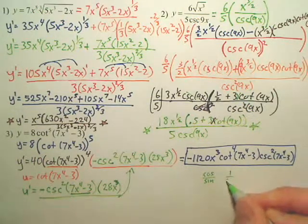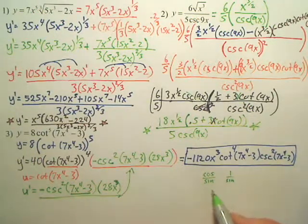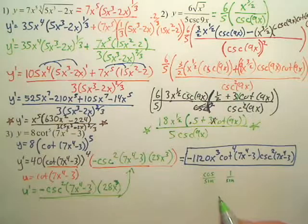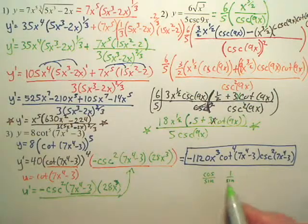Isn't cosecant 1 over sine? Could I make it in cosines and sines? But do you see anything canceling? No. So, it's not really necessary to change. This is good enough.